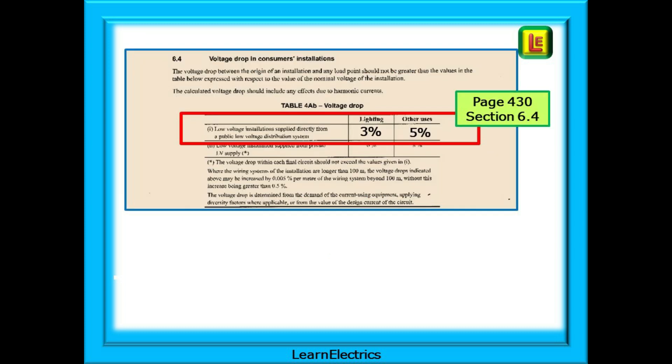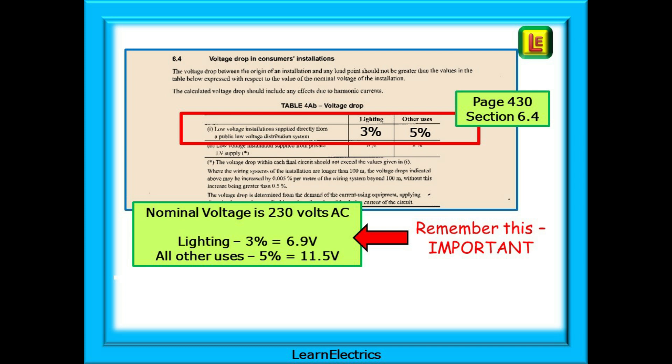This is section 6.4 voltage drop in consumer installations. This table can also be quickly located by looking in table of tables at the back of the book. Right now we're interested in the top row of the table. Low voltage installations supplied directly from a public low voltage distribution system. In other words the national grid. This table tells us that the maximum permissible voltage drop should not be greater than 3% of the nominal voltage for a lighting circuit and not more than 5% for all other circuits. Shown here are the voltage limits that 3% and 5% represent for a single phase nominal voltage of 230 volts. This means that lighting has a voltage drop limit of 6.9 volts and all other uses has a limit of 11.5 volts. This table is often used for exam questions. Learn how to find it.